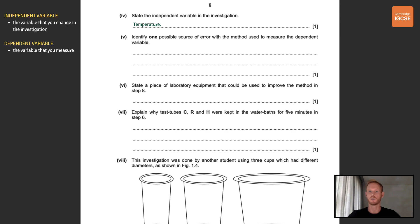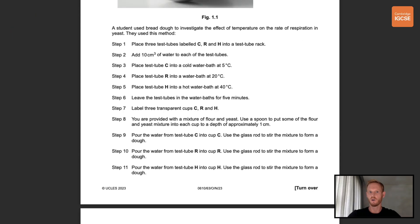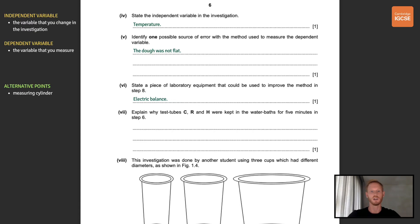So what's one possible source of error associated with measuring dough height? Well, the dough was obviously not flat. It was rounded, it wasn't smooth, and this meant that we weren't getting a truly accurate measure of change in dough volume. Next, state a piece of laboratory equipment that could be used to improve the method in step eight. So step eight involved spooning the flour and yeast mixture into the three cups to a height of approximately one centimeter. So for this one, we could have used an electric balance to ensure that the mass of dry ingredients was the same in each cup, or a measuring cylinder, which would have allowed us to more accurately measure the height of the ingredients.